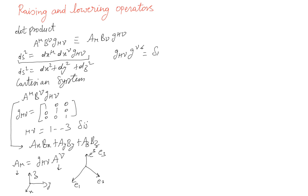There is one more important relationship: g^mu_nu equals the inverse of g_mu_nu. If you write this as a matrix, you can just take the inverse to find the superscript form from the subscript form and vice versa. Both of these are actually tensors — that's what we call the metric tensor.